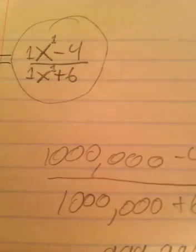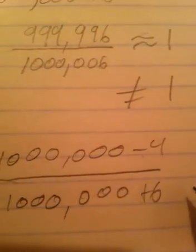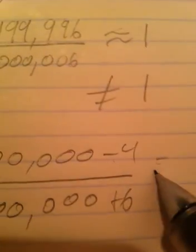Now, similarly, if x approached a negative number, for example, if it went towards negative infinity, I'll use negative 1,000,000, for example. Negative 1,000,000 minus 4 over negative 1,000,000 plus 6. This equals negative 1,000,004 over negative 999,994. Your negatives cancel out. Now, this is really close to 1, but it does not equal 1.